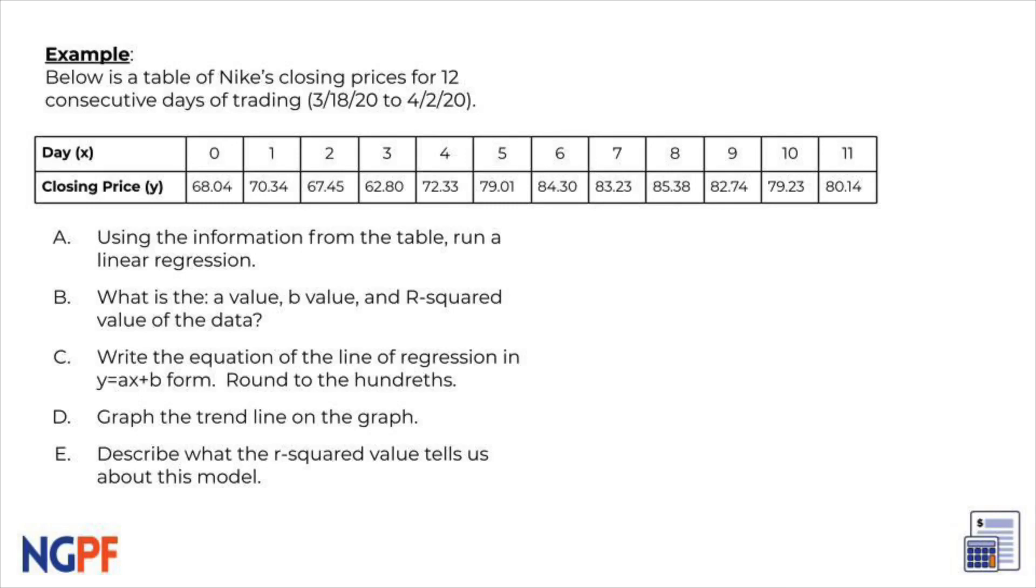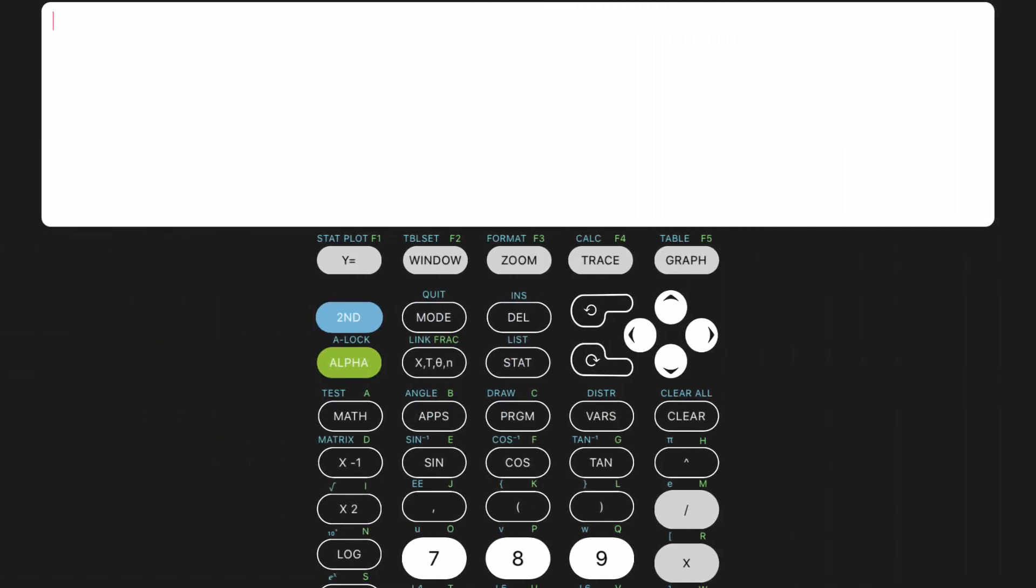Let's try this example. We are provided with a table of Nike's closing prices for 12 consecutive days of trading in 2020. We need to run a linear regression of this data by using a graphing calculator. The first step we can take is to enter the data into the calculator. It may be a little tedious, but I'll show you how to get there.